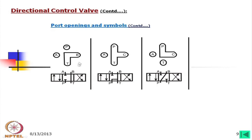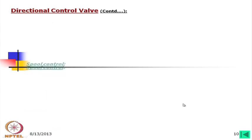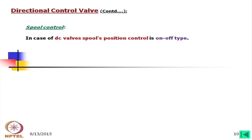Looking at the remaining symbols, you can study these configurations on your own: B to T is connected here, P and T are connected here. In the case of DC valves, spool position control is on/off type. In some cases, we can keep the spool in an intermediate position to control flow and pressure to some extent, but this is not the intended purpose of the spool valve.